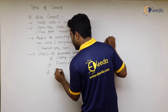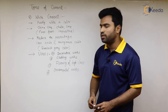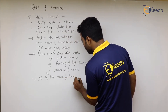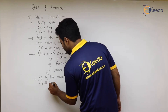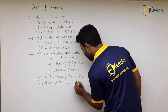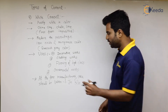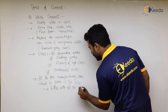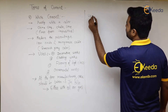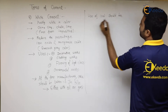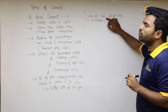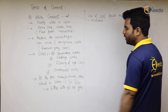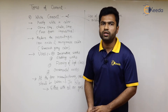White cement is also used in cladding work, wall cladding, high-class flooring, and ornamental work. During manufacturing, the ingredients should be burned using oil or gas — use of coal should be strictly avoided because it may change the color of the cement.